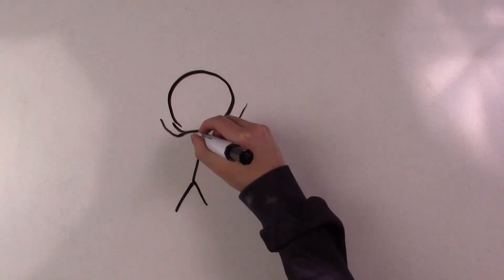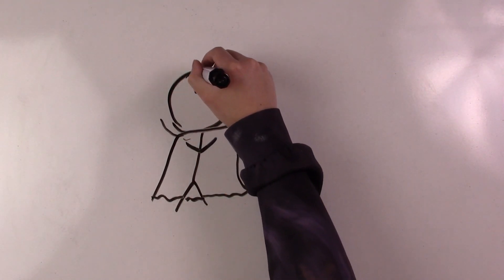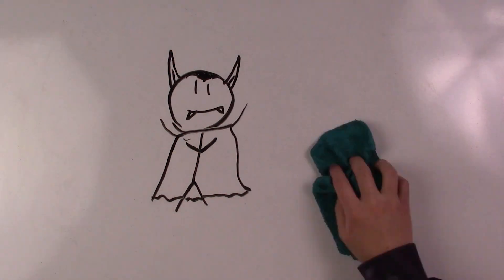Number 8, Vampires. A myth from Europe. A bloodsucker that can turn into a bat and feeds off of blood.